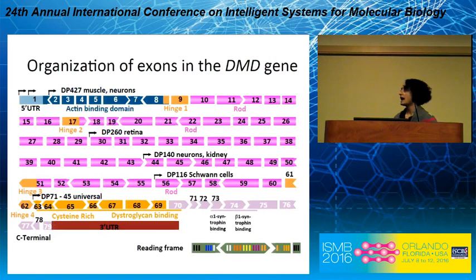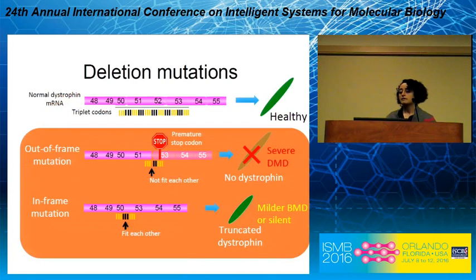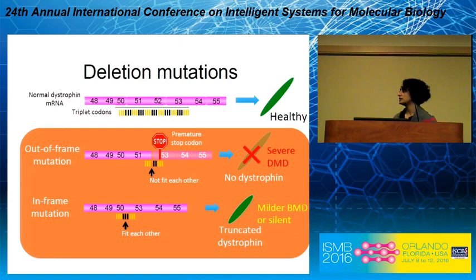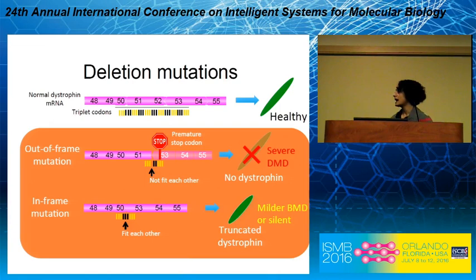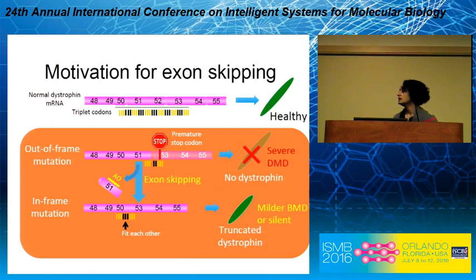The DMD gene is our longest gene and has 79 exons that fit together like pieces of a puzzle. Deletion mutations are the most common mutations of DMD, and the two shown here are examples involving exon 52. In the first, when exon 52 is deleted, the exons do not fit together anymore, so the patient is unable to produce dystrophin protein and develops severe DMD phenotypes. In contrast, if exons 51 and 52 are deleted together, it's called an in-frame mutation, and the patient is capable of producing a truncated but still functional dystrophin protein with very mild phenotypes.